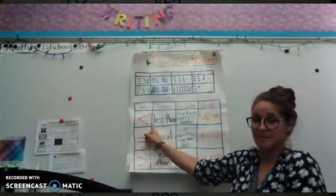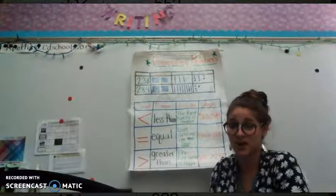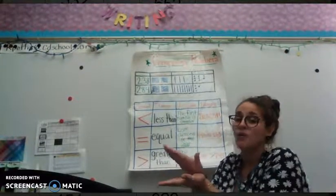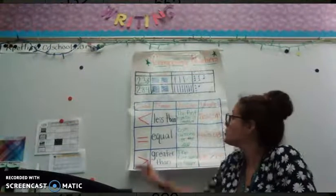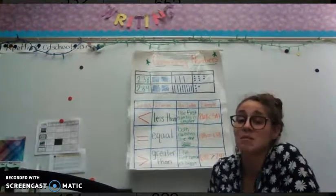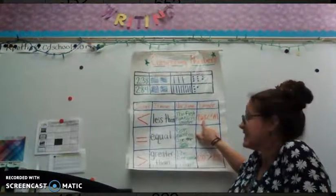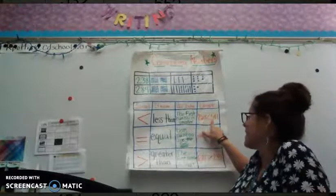First is less than. That is when, you might have seen this before, some might have described it as like an alligator wanting to eat the number. So this less than symbol is when the first number is smaller. Here's an example. 268 is less than 541.